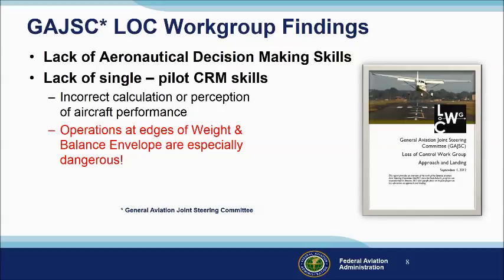Here are some more GA JSC findings from their recent study of loss of control accidents. Most fatal GA loss of control accident investigations cite inadequacies in aeronautical decision-making and, a subset of ADM, single-pilot cockpit resource management skills. Occasionally, investigations have discovered causal factors resulting from unreasonable expectations of aircraft performance, especially when operating at the edges of the aircraft weight and balance envelope. That's why the loss of control workgroup suggests improvement in pilots' understanding and calculation of aircraft performance.